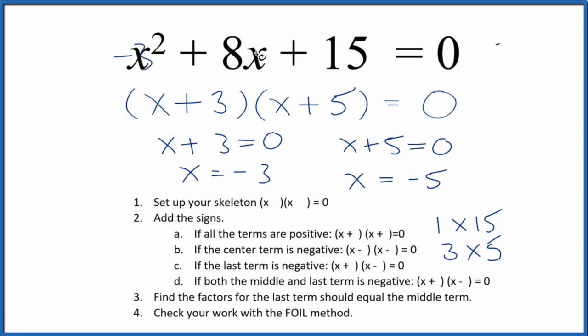If you put negative 3 in for x, you do the math, this side of the equation will equal zero. Likewise, if you put negative 5 in for x, do the math, it'll equal zero. If you use the quadratic equation, you're going to get these exact same numbers.